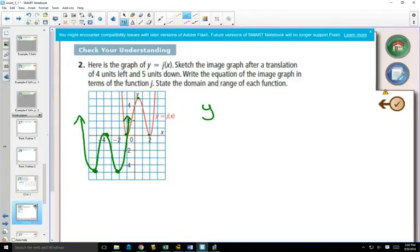This green equation is going to be—well, we've moved the function j 4 to the left, that's going to happen inside the function. And 5 down, that's going to happen outside of the function.